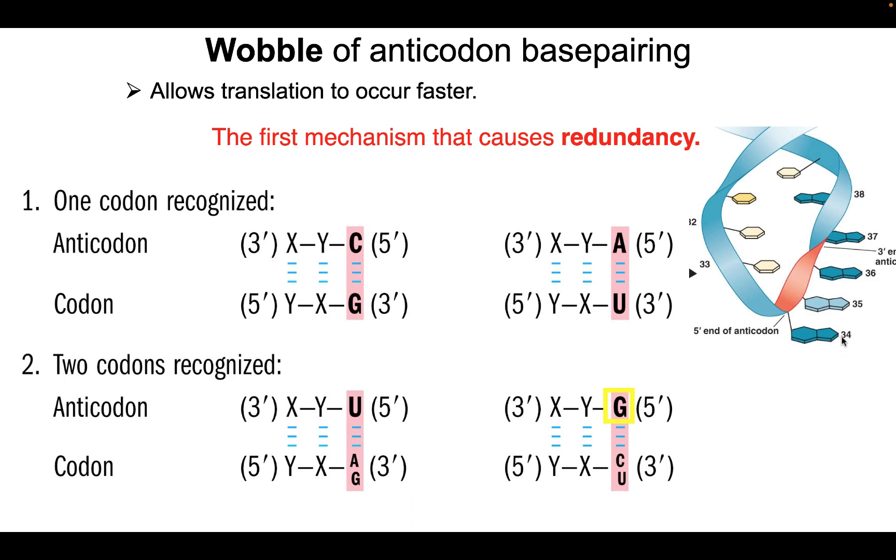If, however, this base in the 5' most position of the anticodon is a G, same thing, it could bind to a C, but it can tolerate this unusual base pair of binding to a U. So it has the ability then of binding to two different codons. Now, if it is a C or an A in this position, there is no wobble effect, and the C will only bind to G, and an A will only bind to U.